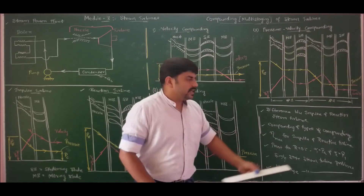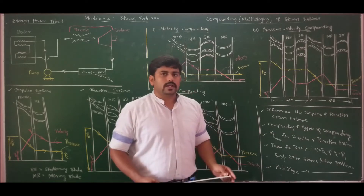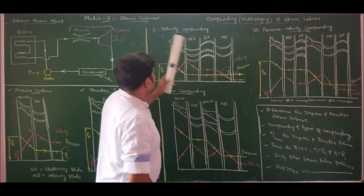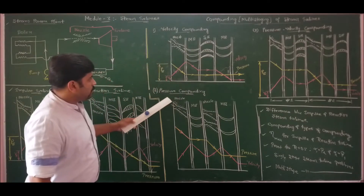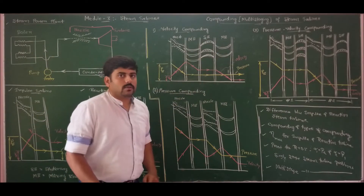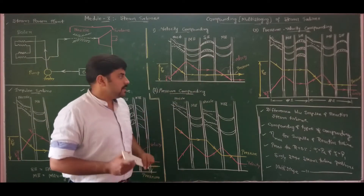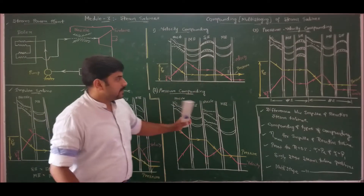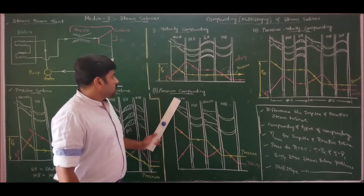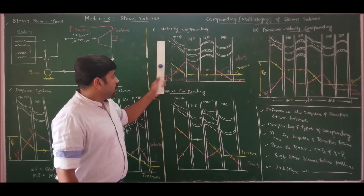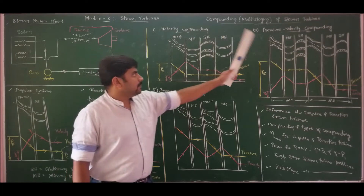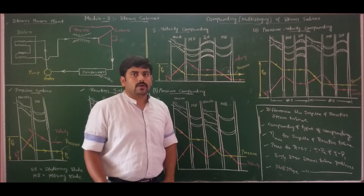The three major types of compounding are: velocity compounding, pressure compounding, and pressure-velocity compounding. Let us discuss each one.